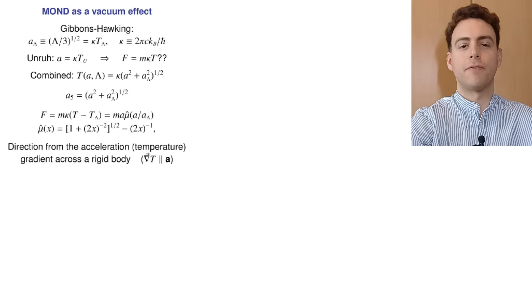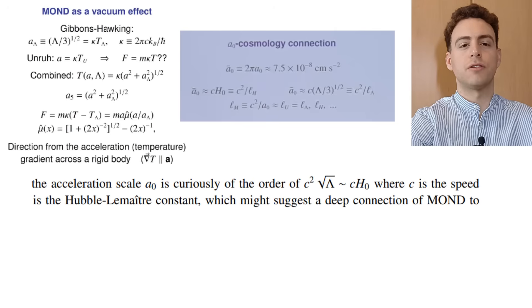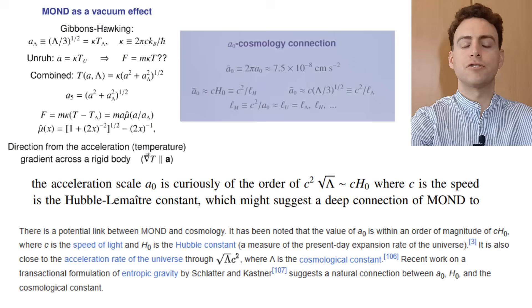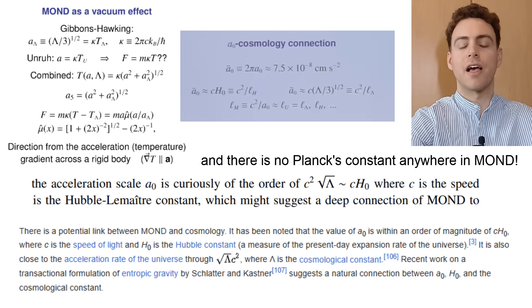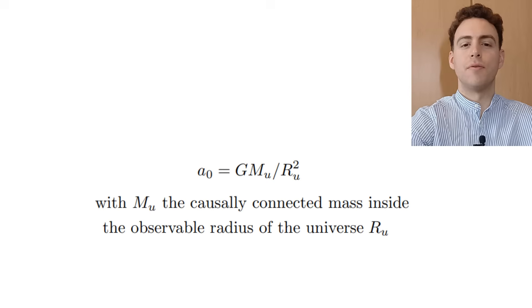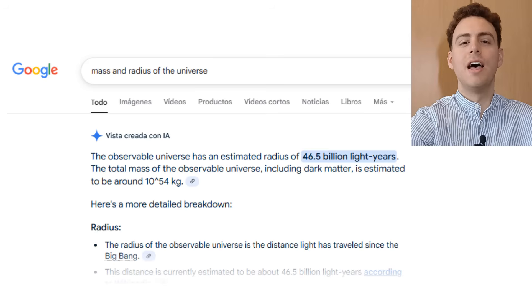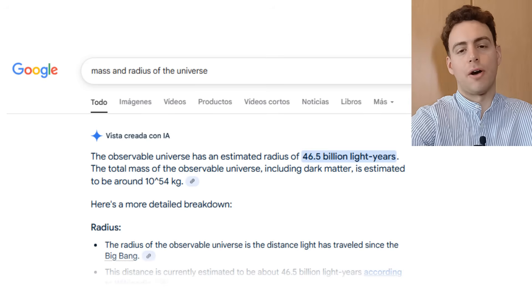What is the evidence we have for MOND having an origin in the quantum vacuum? The only evidence is that the acceleration scale constant matches a relationship with the cosmological constant of dark energy. But this cosmological constant is only measured indirectly, and no one knows what dark energy really is — not even if it comes from a non-zero energy of the vacuum. In contrast, MOND's acceleration scale constant matches the gravitational acceleration or field intensity calculated from the mass and observable radius of the universe, and these values are directly measured, although approximately.